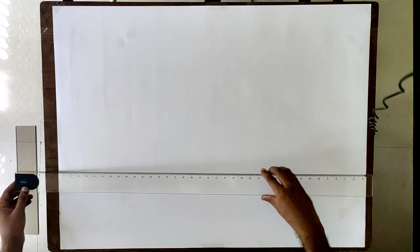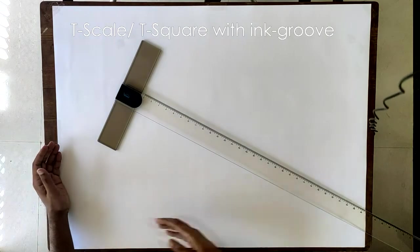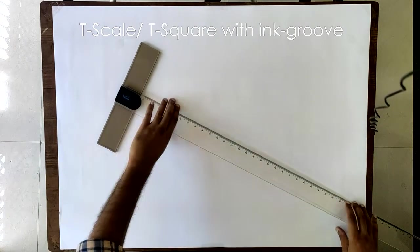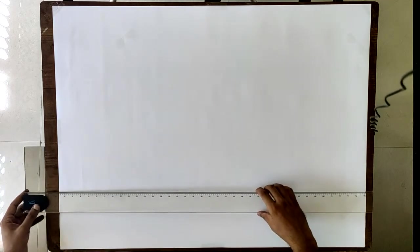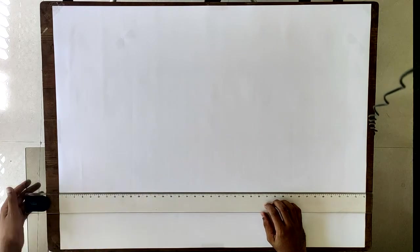This is the first thing that you need. The most important instrument that you are going to use is the T-scale, also known as a T-square. I think it is obvious why it is called a T-scale. A T-scale is used mainly to draw horizontal lines, only horizontal lines.